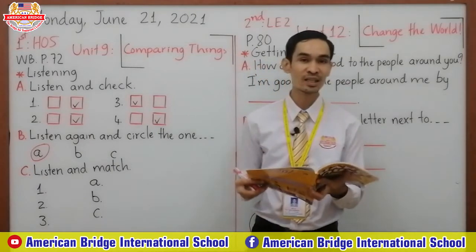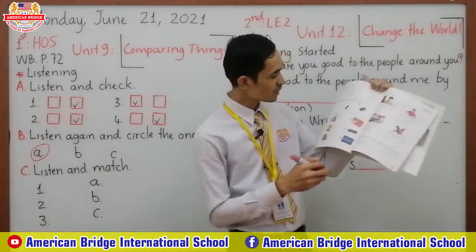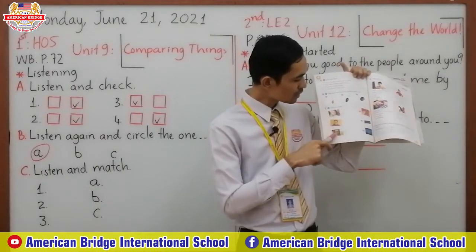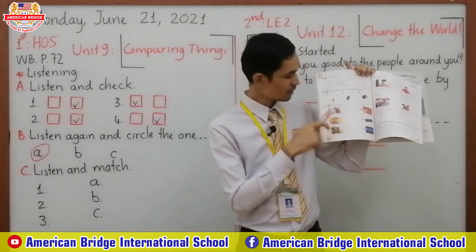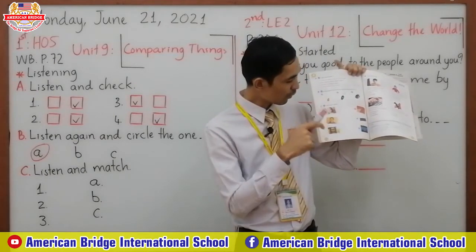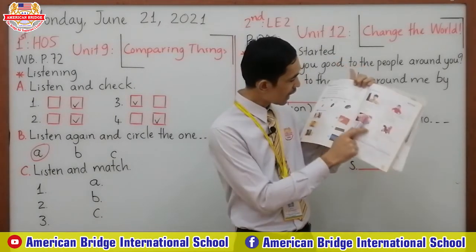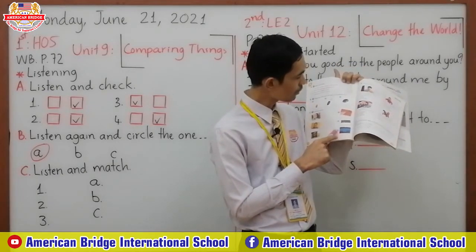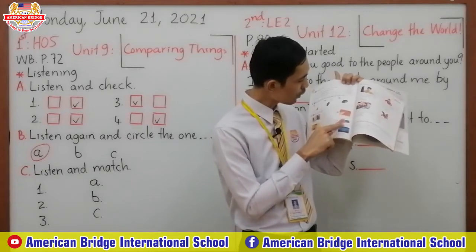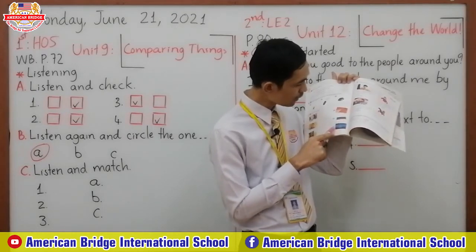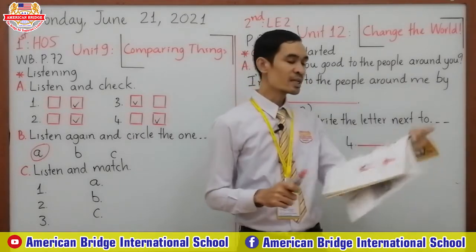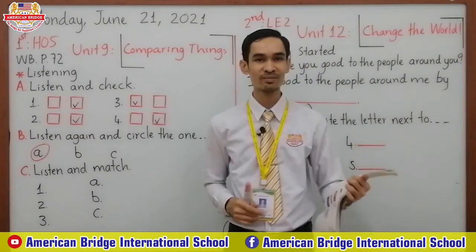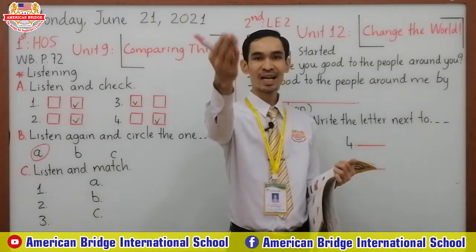C: Listen and match. So here we have three children — one girl and two boys, and three girls on the other side. Options A, B, C: we have different keyboards — a white keyboard, a black keyboard, and a blue keyboard. So now I would like you to listen to the track carefully and then match. Now listen.